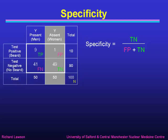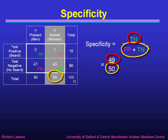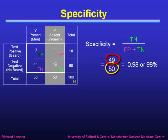On the other hand, specificity is defined as the true negatives divided by the sum of the false positives plus the true negatives. It's derived from the numbers in the shaded right-hand column — those where Y-syndrome is absent. So with the beard test, it's the true negatives, which is 49, divided by the sum of false positives and true negatives, which is the total in the right-hand column: 50. 49 over 50 is 0.98 or 98% — the fraction we got right in the right-hand column.